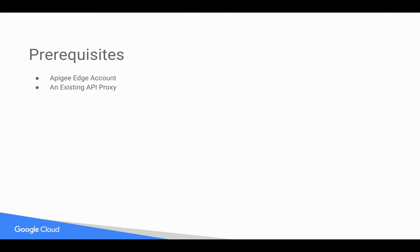Prerequisites for this video: you need an Apigee Edge account, which is free and registered at apigee.com/edge. You also need an existing API proxy that we used in the DevJump 3.0 lab guide.